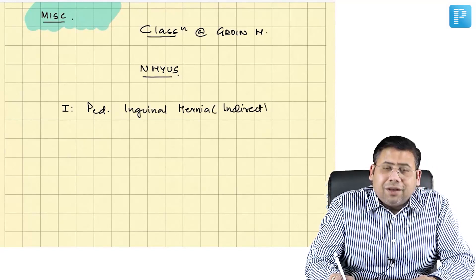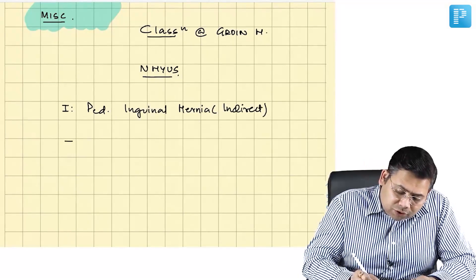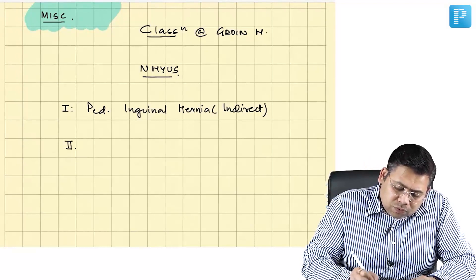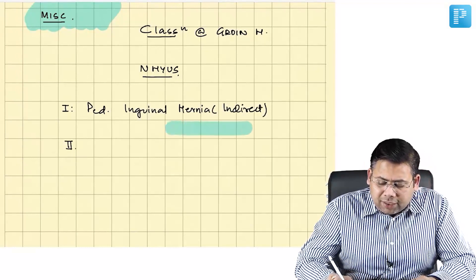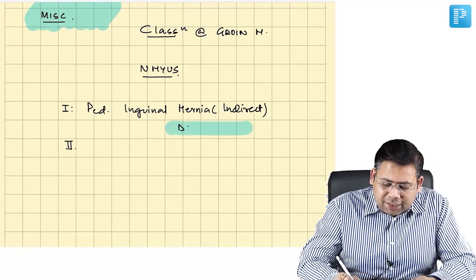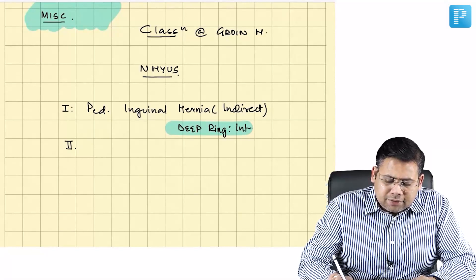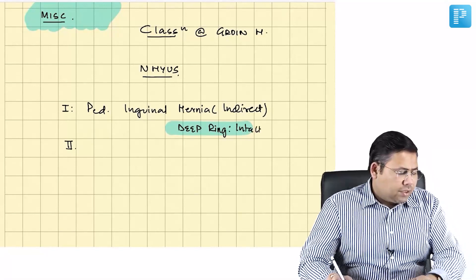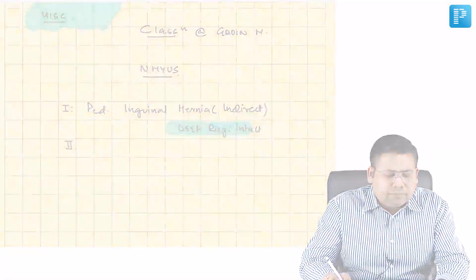Indirect pediatric inguinal hernia is Type 1. What is Type 2? The difference is that in Type 1 the deep ring is intact.